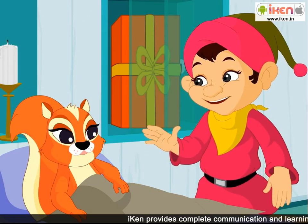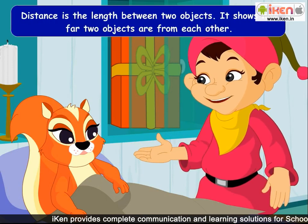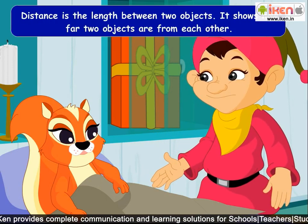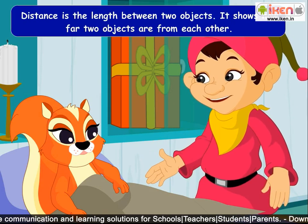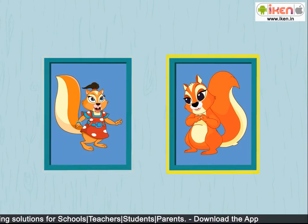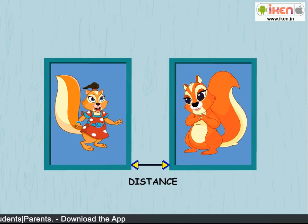First, let us understand what distance is. Distance is the length between two objects — it shows how far two objects are from each other. This is one object, and this is another object. This end to this end is called the distance between the two frames.